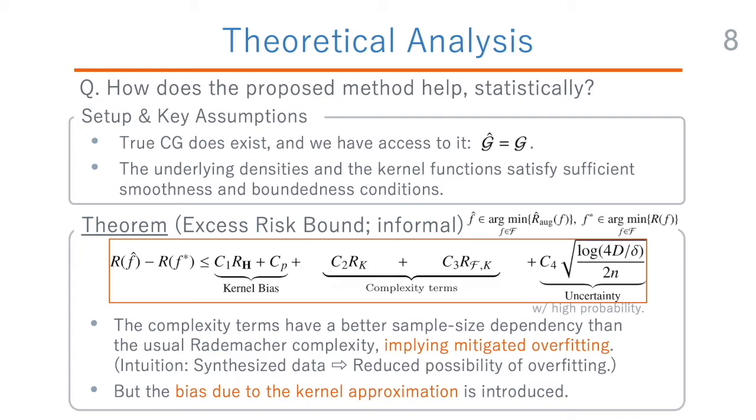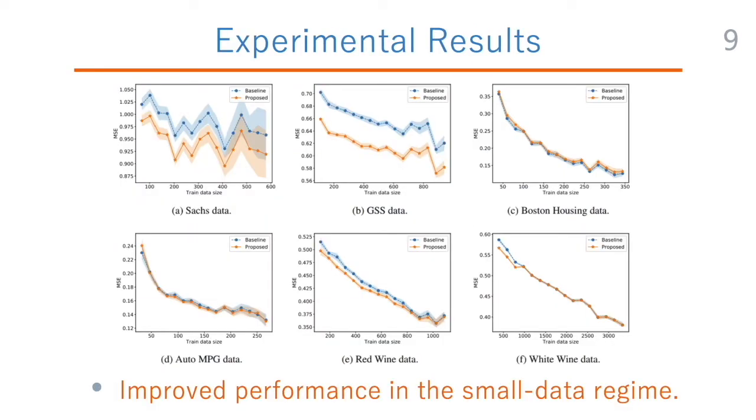Therefore, the question is, is this complexity reduction effect worth the extra bias in practice? The answer turns out to be yes, especially in the small data regime and when we have access to the causal graphs based on the domain knowledge.